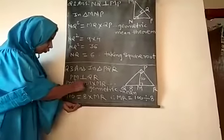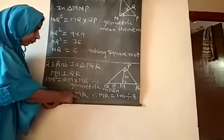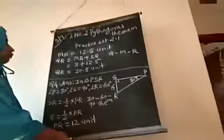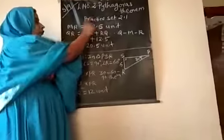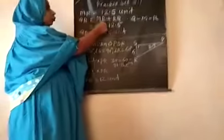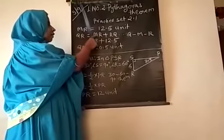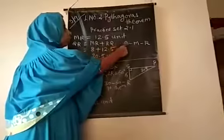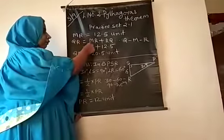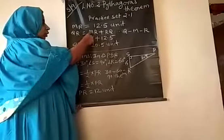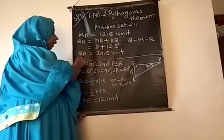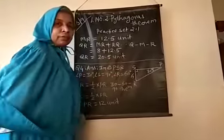Putting in the values: PM is given as 10, so 10 squared equals 100, which equals QM (which is 8) multiplied by MR. Therefore MR equals 100 divided by 8, which gives MR equals 12.5 units. Now to find QR: since M lies between Q and R, QR equals QM plus MR, that is 8 plus 12.5, which equals 20.5 units.